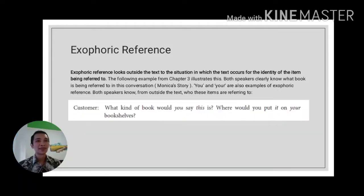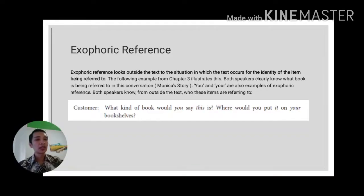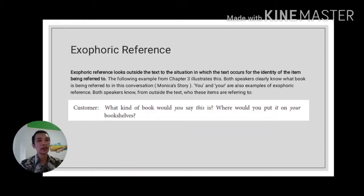The third reference is exophoric reference, which looks outside the text to the situation in which the text occurs to find the identity of the item being referred to. For example, a customer holds a book and asks the seller: 'What kind of book would you say this is? Where would you put it on your bookshelf?' The customer didn't mention the title, but both the customer and seller share context about a certain book, so 'it' does not refer to any specific word in the sentence but to something outside the conversation.